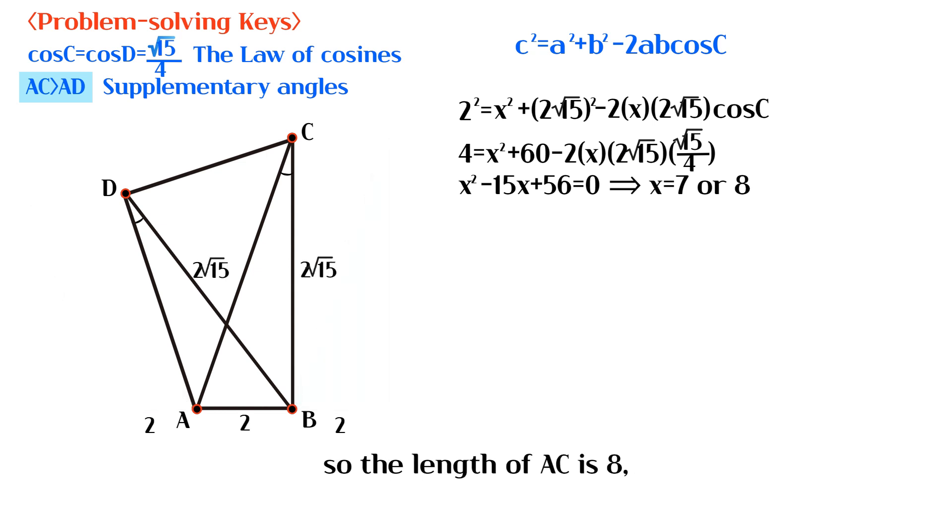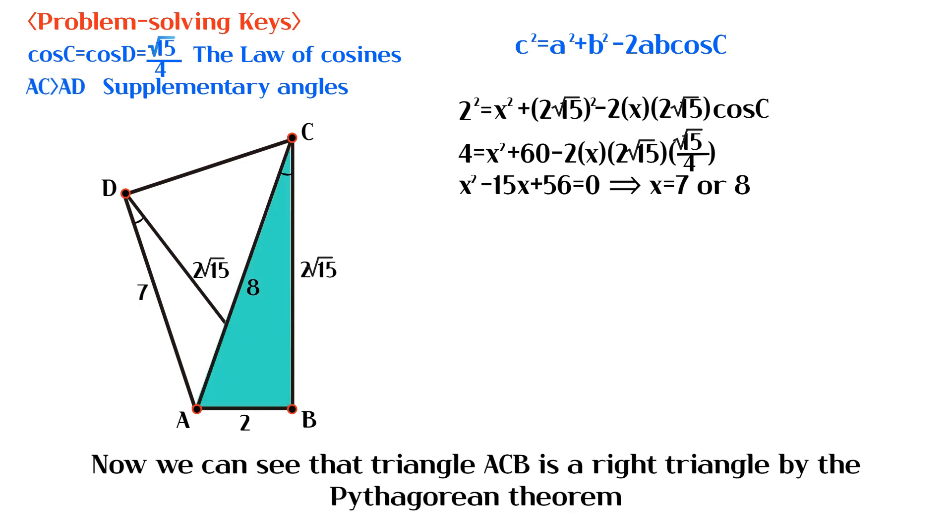So the length of AC is 8, and the length of AD is 7. Now we can see that triangle ACB is a right triangle by the Pythagorean theorem.